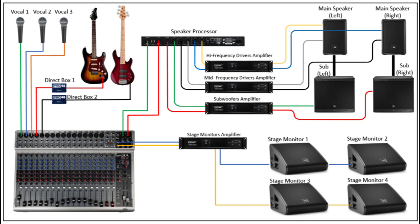Two, connect the amplifier. Connect the main output of the mixer to the input of the power amplifier using balanced audio cables. Make sure the cables are plugged into the appropriate input-output jacks. Three, connect the speakers. Connect the output of the power amplifier to the speakers using speaker cables. Match the impedance of the amplifier and speakers for optimal performance.